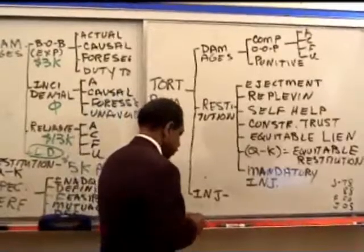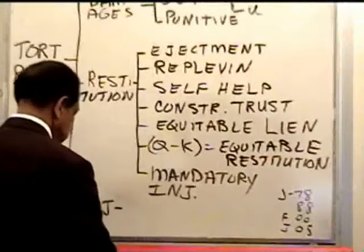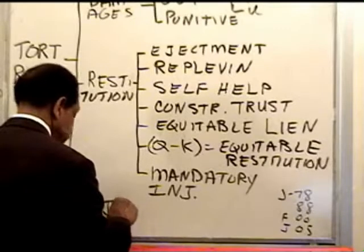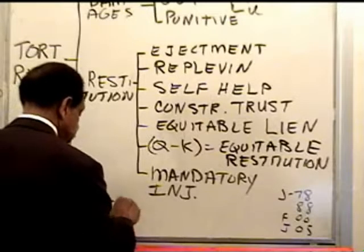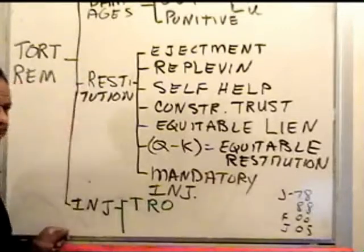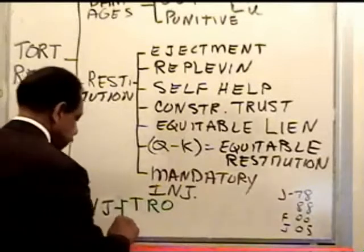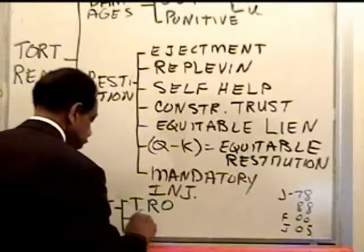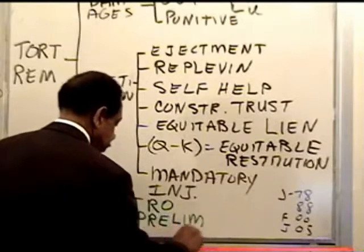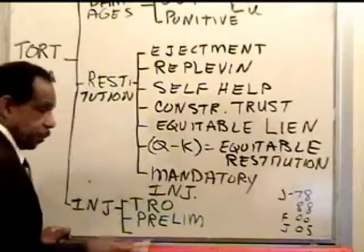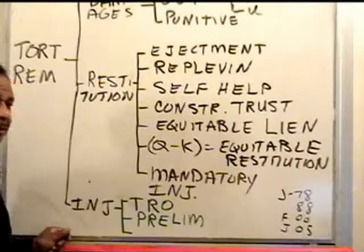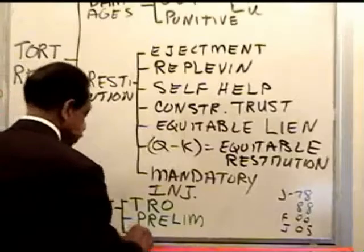There are three branches to the injunction that we need to know about: number one, the TRO — temporary restraining order; number two, the preliminary injunction; and number three, the regular injunction, sometimes called the permanent injunction, though that's misleading — just call it the injunction, because it may not be permanent.